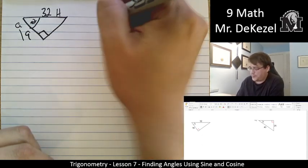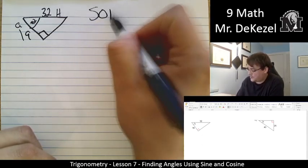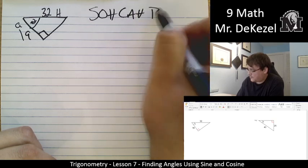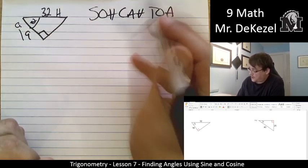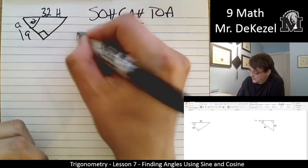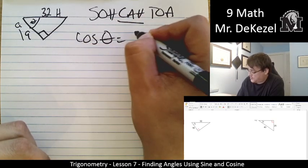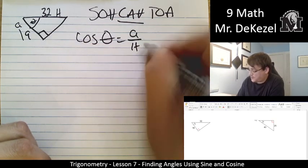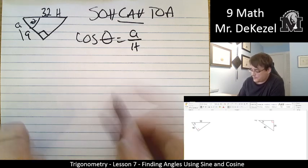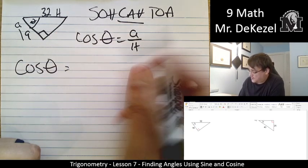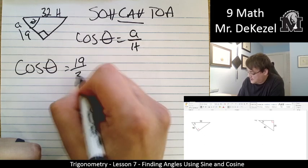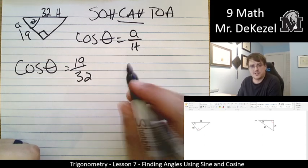We have identified the sides. We're going to pick which trigonometric ratio to use. We have adjacent and hypotenuse. That is cosine. Cosine of theta is equal to adjacent over hypotenuse. Plug in those numbers. Cosine of theta is equal to adjacent is 19, and hypotenuse is 32.